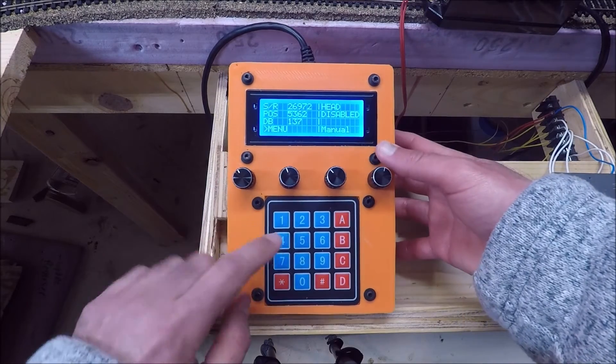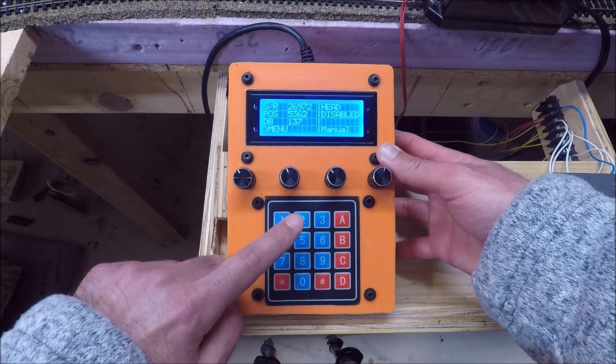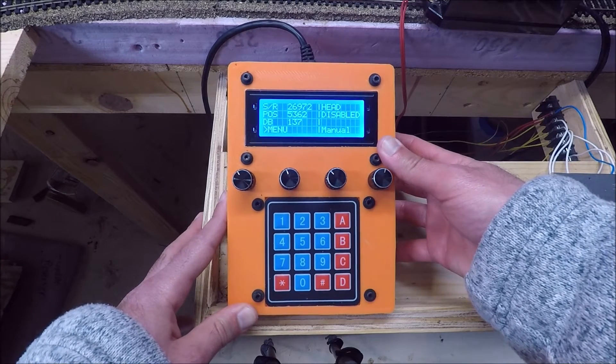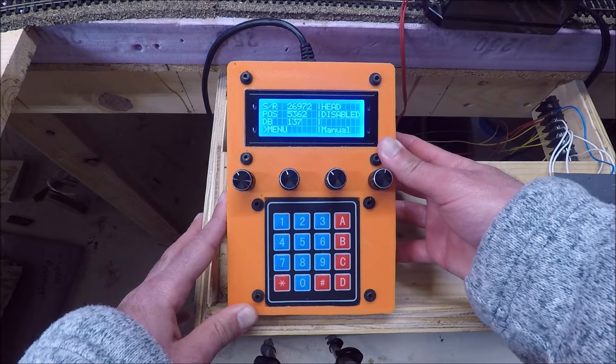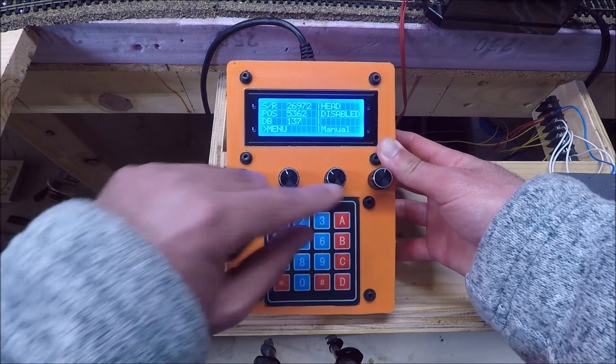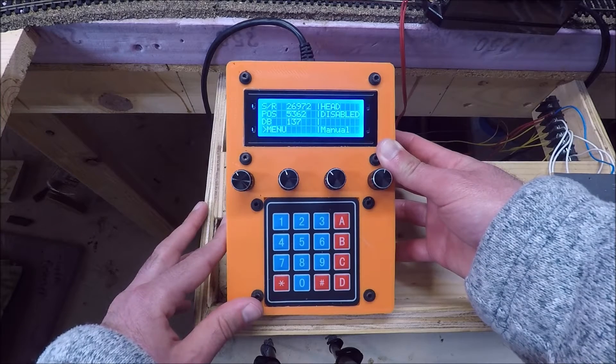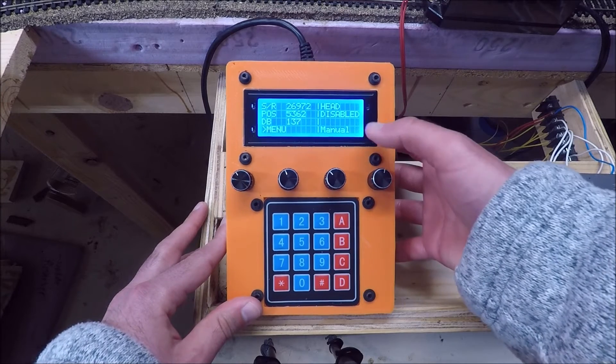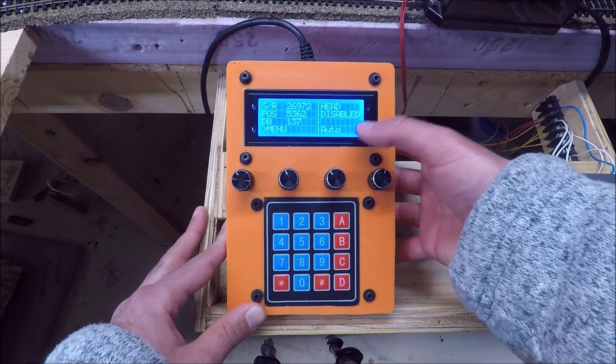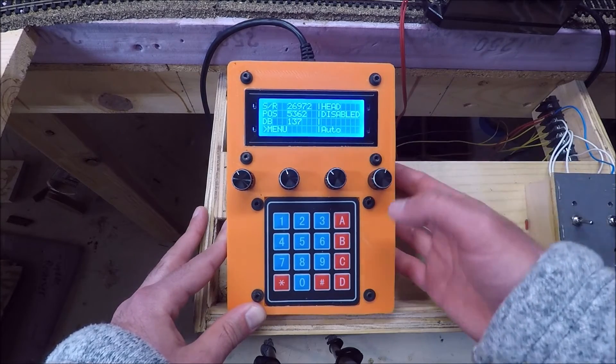And then the star button changes it between automatic and manual. So right now you're in manual mode. So none of these buttons, if you press them, will move the turntable. Manual mode is really good for people who don't really want to use this controller to have automatic functions, just want to use it to move clockwise and counterclockwise. Or if you're troubleshooting something, manual mode works really well. And then you can switch it back to automatic mode anytime you want. So that tells you what mode you're in.